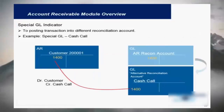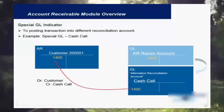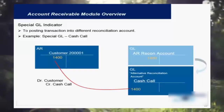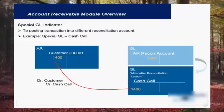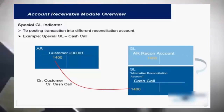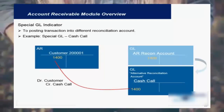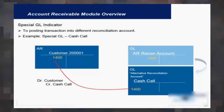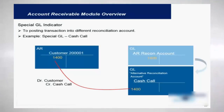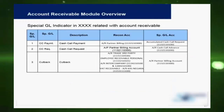Special GL indicators are mainly used for advanced payments made by the customer. For example, once an invoice is posted for a customer, you can have a reconciliation account for a cash call that gets automatically posted to. A special GL indicator is added during the special GL posting. This is just an example showing the special GL indicators which can be used in the system.